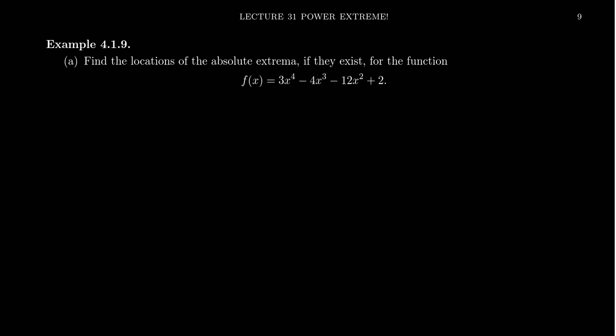In this example, we're going to find the locations of the absolute extrema, if they exist, for the polynomial function f(x) equals 3x to the fourth minus 4x cubed minus 12x squared plus 2.